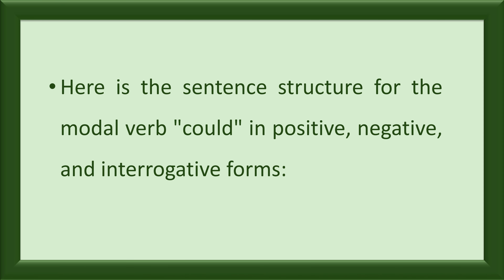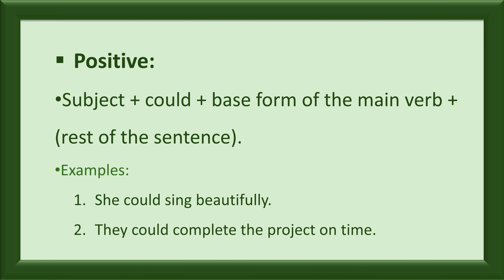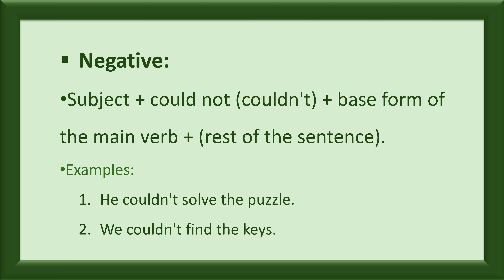Here is the sentence structure for the modal verb could in positive, negative, and interrogative forms. Positive: Subject plus could plus base form of the main verb plus rest of the sentence. Examples: She could sing beautifully. They could complete the project on time.